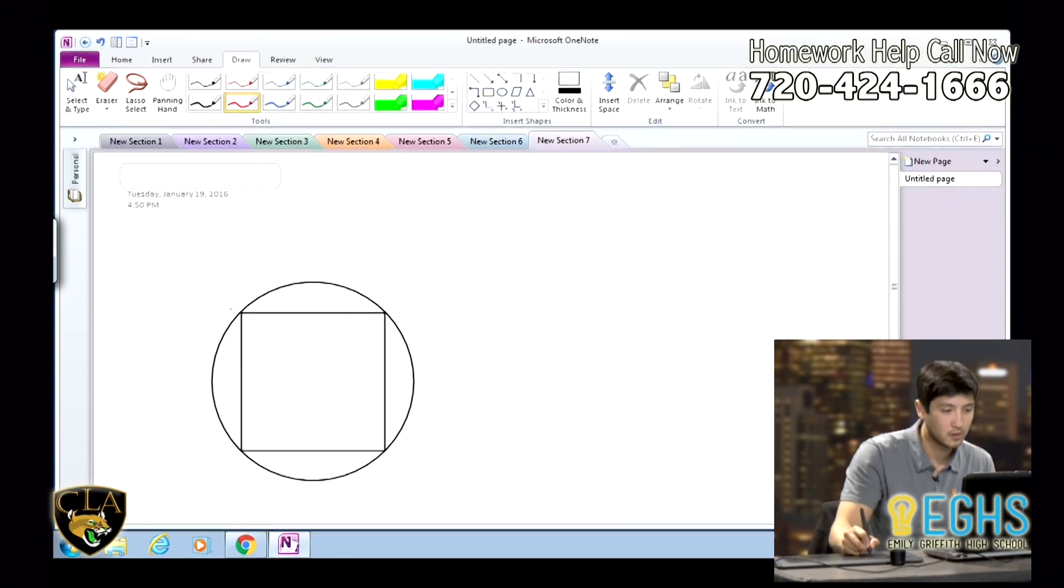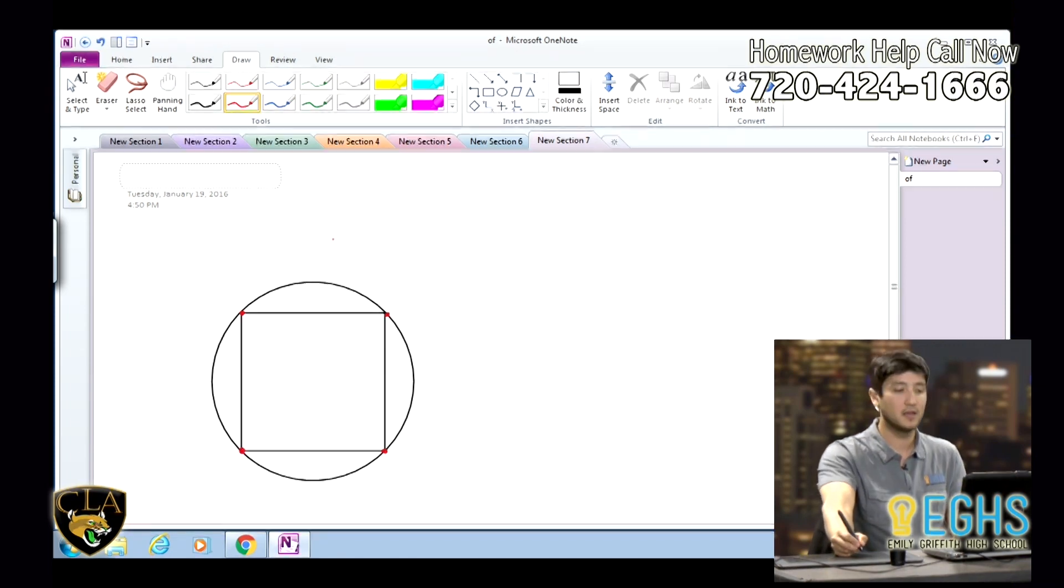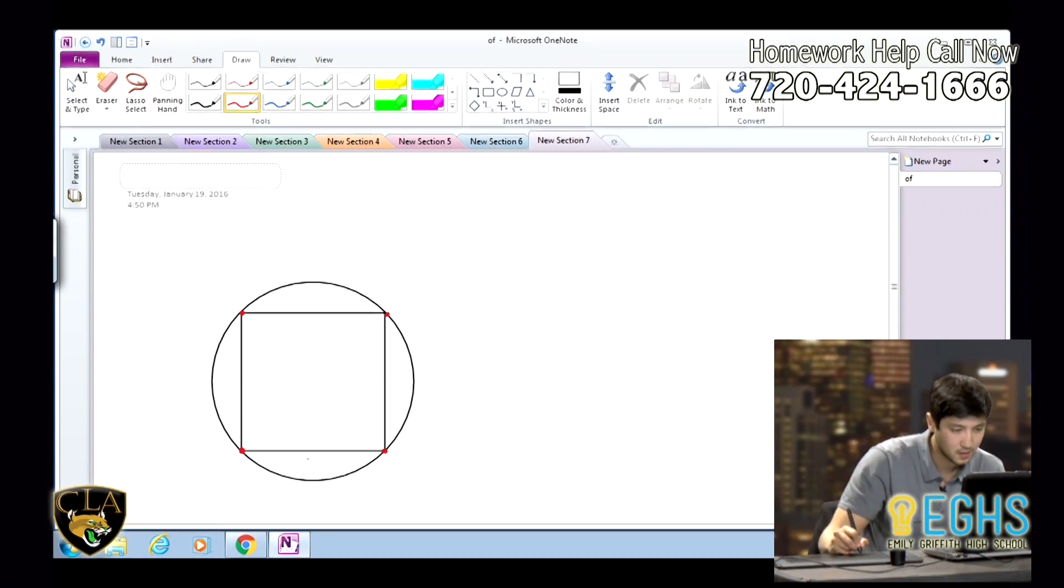Where all four corners of our rectangle touch the outside of the circle. So, and you said the measurements of the rectangle are three feet by four feet? Yes. Okay, so I'm going to go ahead and label that.